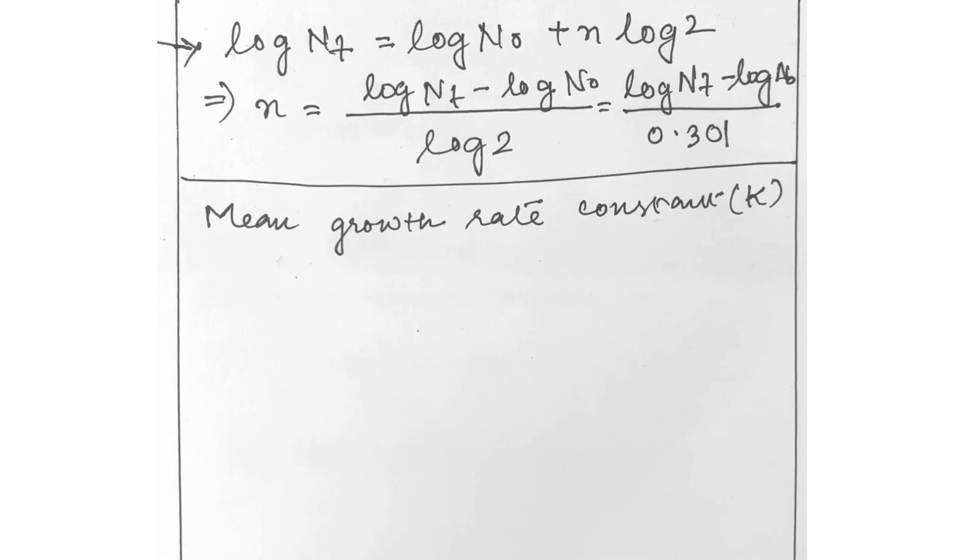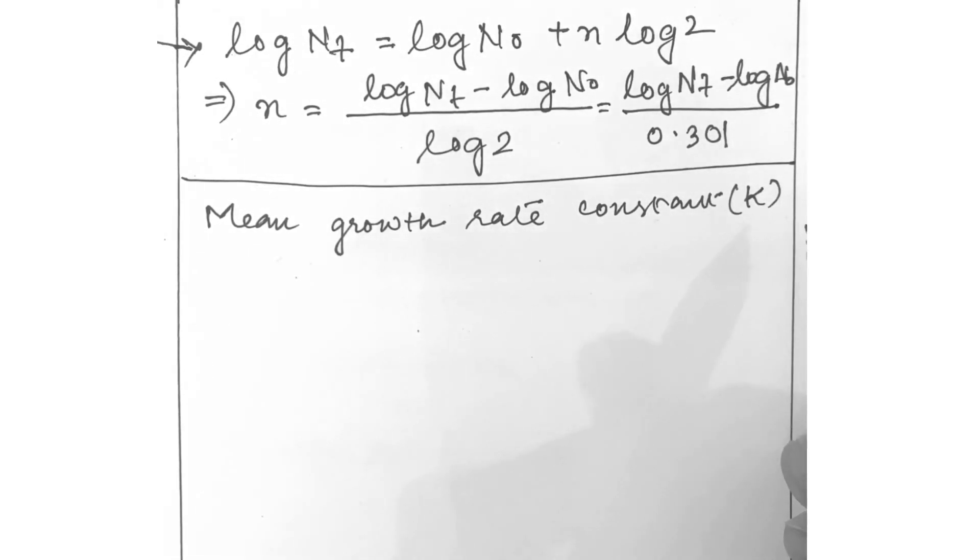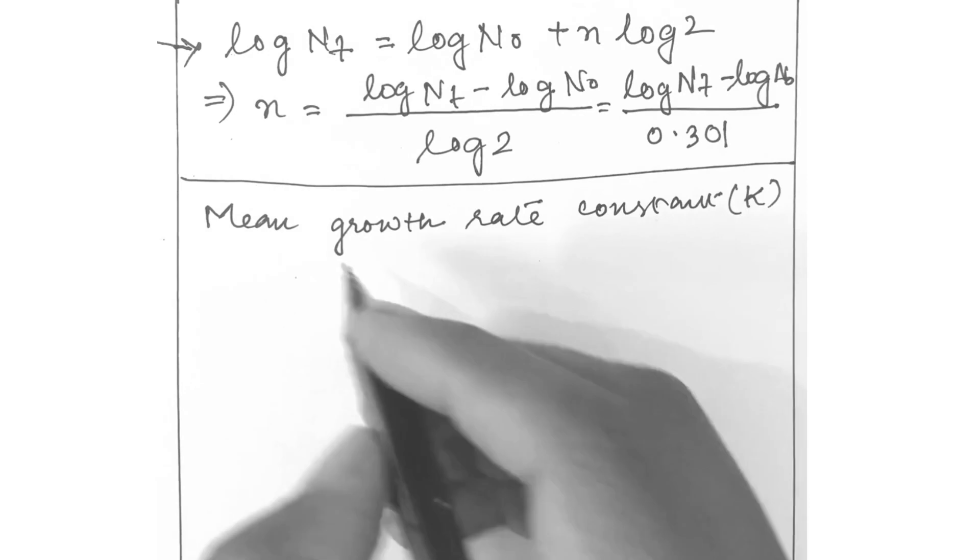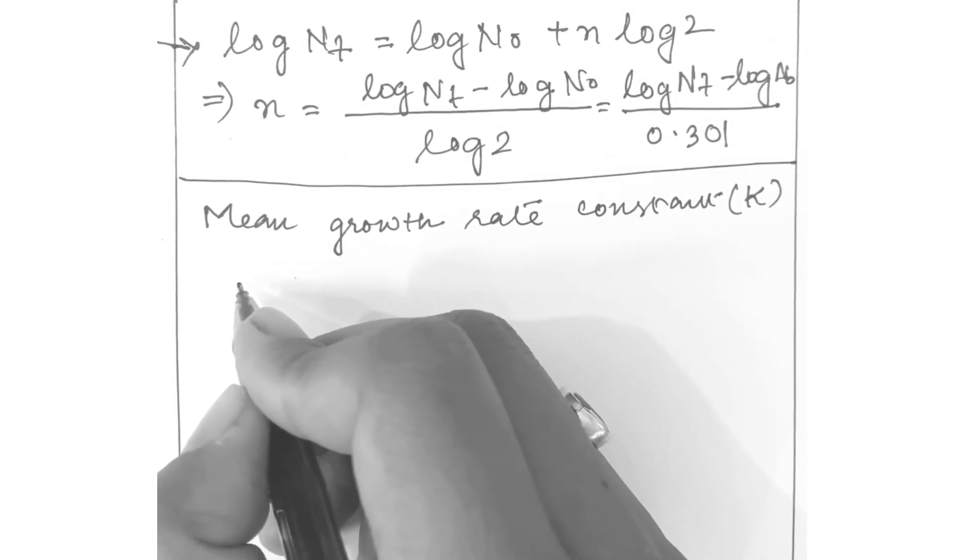The rate of growth during the exponential phase in a batch culture can be expressed in terms of the mean growth rate constant, that is kappa. This is the number of generations per unit time, which is often expressed as generations per hour. Now solving the equation for number of generations per hour.